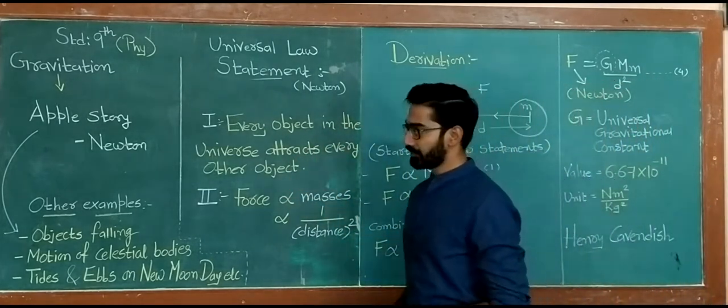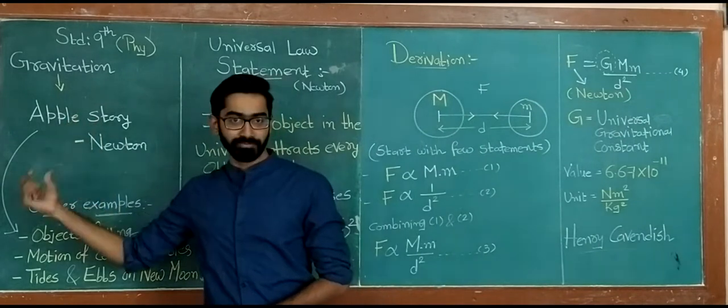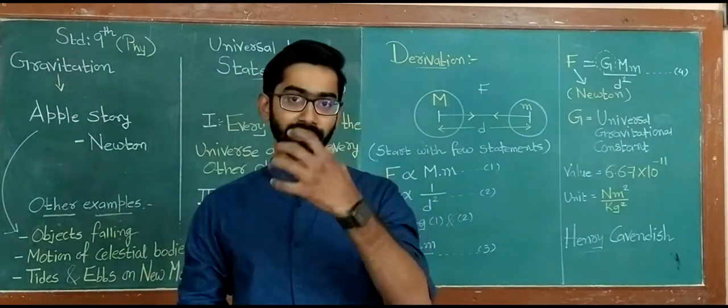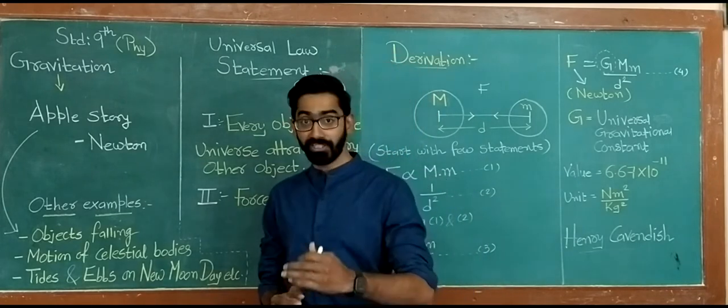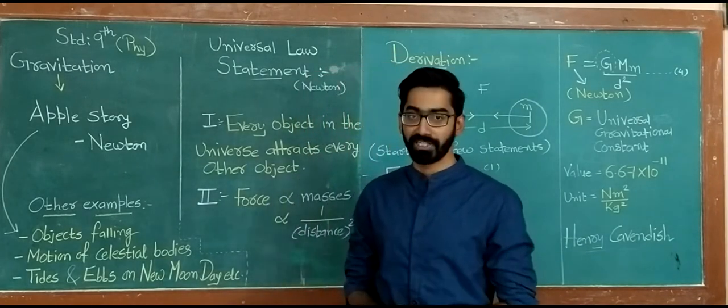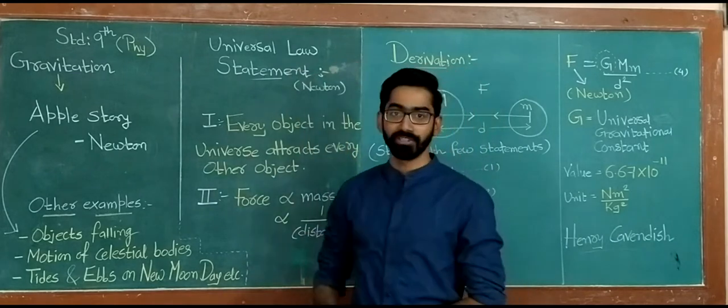Now, we are familiar with the very famous Apple story. Newton was sitting under the Apple tree, the Apple fell, and he observed and concluded. And finally, he came up with a law, which is right now called the universal law of gravitation.